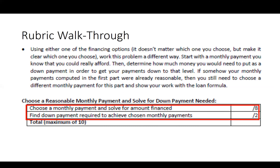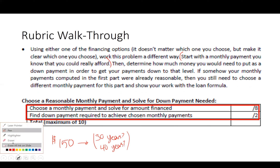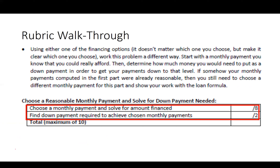You're going to choose one of the financing options and work the problem a different way. Start with a monthly payment you can actually afford — say $150 a month — and figure out how long it would take to pay off the car at that payment using your interest rate. If your computed monthly payments from the first part were already reasonable, choose a different monthly payment for this part and show your work with the loan formula.